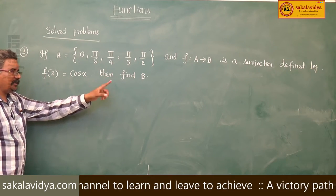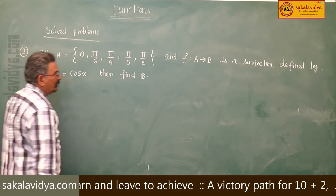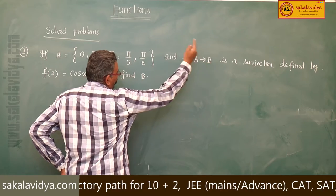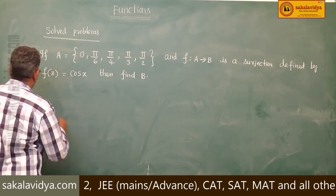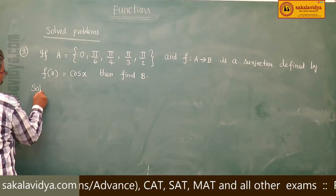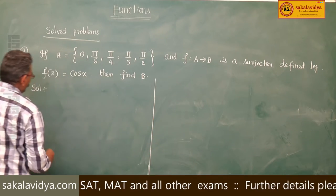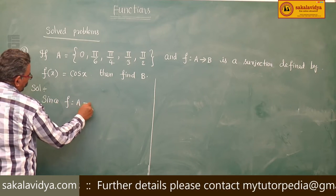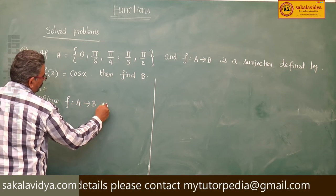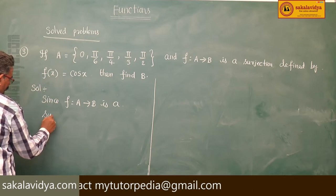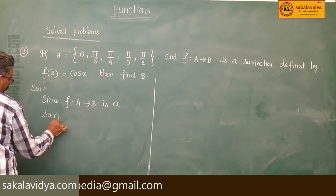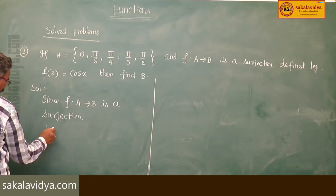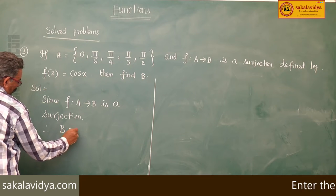Since f: A → B is a surjection, the codomain B equals its range, that means B = f(A). Since f is a surjection, therefore B = f(A).